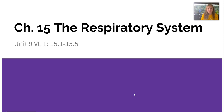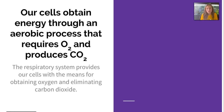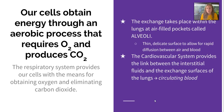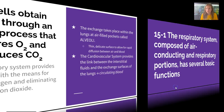Carlson here to start our Unit 9 video lectures with you over Chapter 15 of the Respiratory System. We're going to get through 15-1 and 15-5 today, talking about how our cells obtain energy through an aerobic process that requires oxygen and produces carbon dioxide. This exchange takes place within the lungs at air-filled pockets called alveoli, which have a thin, delicate surface to allow for rapid diffusion between the air and the blood. This is the respiratory system's connection with the cardiovascular system, providing the link between the interstitial fluids and the exchange surfaces of the lungs through our circulating blood.